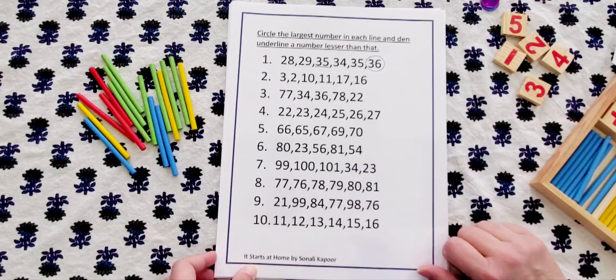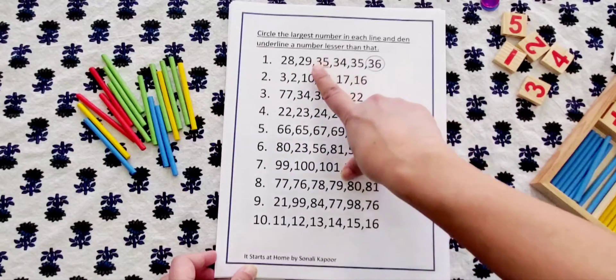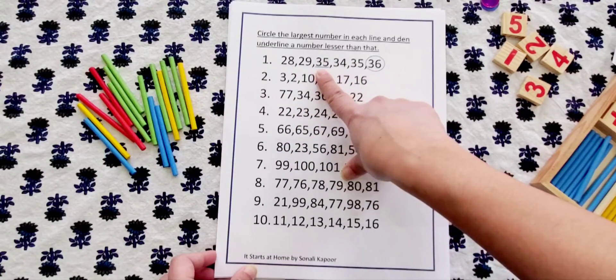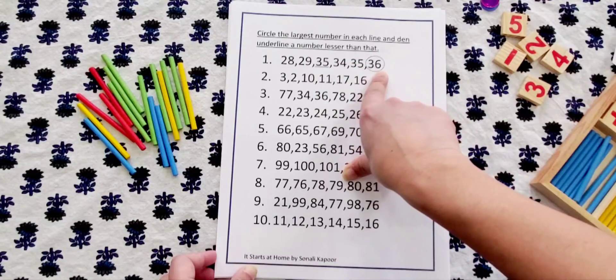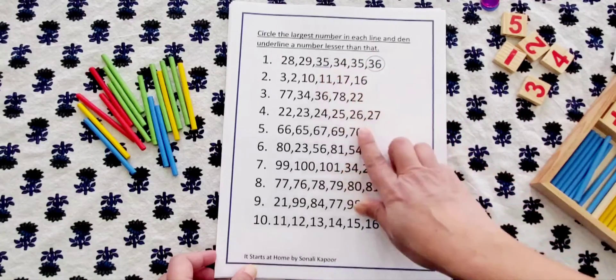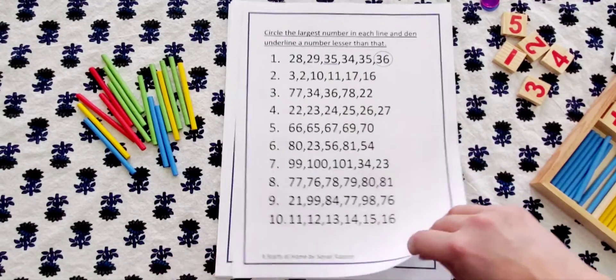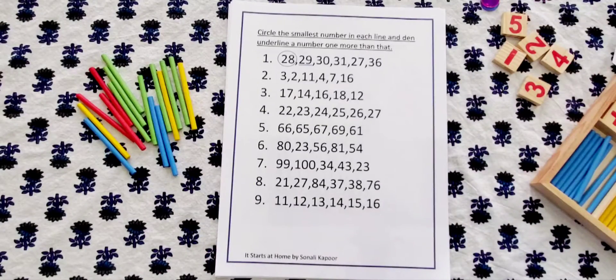Now circle the largest number in each slide, then underline a number lesser than that. So they have to circle the number that's largest and then they need to underline the number that is lesser than that. So circle 36 and lesser number 35. So for all the 10 they have to do the same.